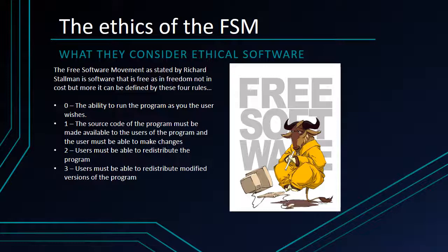Rule number two: users must be able to redistribute the program. This rule states that any software that you buy or get, it is your right to be able to copy it and give it to whoever you want. This essentially goes against what we have nowadays, which is DRM, where you get software — mainly games — that you can't redistribute. So if you buy Office or Windows, you could copy it and give it to people without having to worry about a license.